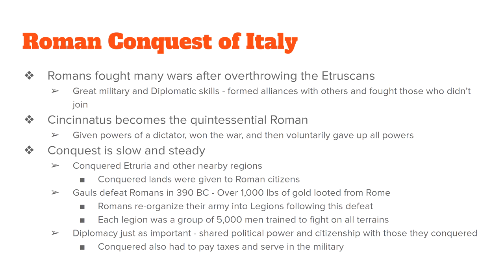By 390 BC, a group of people known as the Gauls attacked the Romans and the city of Rome. You may know them better as the French today, but they were originally known as the Gauls. They looted the city and took over a thousand pounds of gold — worth billions of dollars today.